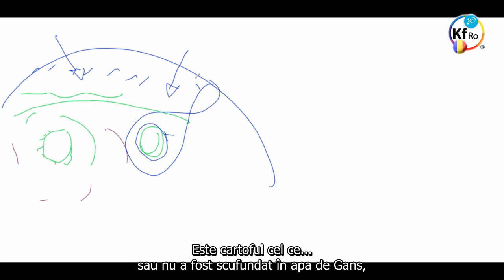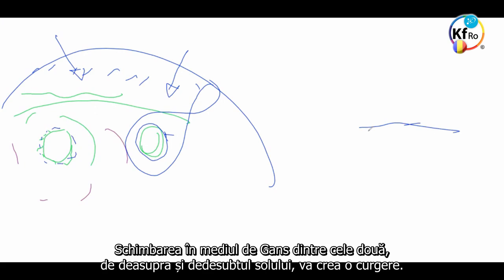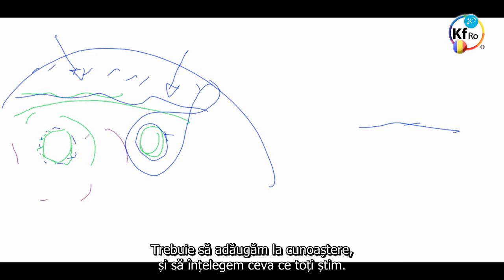Is the potato which has not been soaked with GANS water behaves differently in another field and grows totally different? Would the change in the environment of the GANS between the two, above the soil and below the soil, creates a flow? Do we need to add to the knowledge and understand something which we all know?